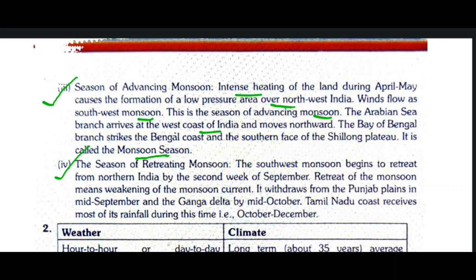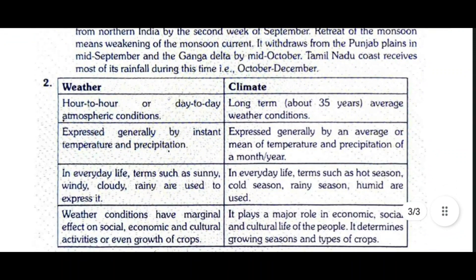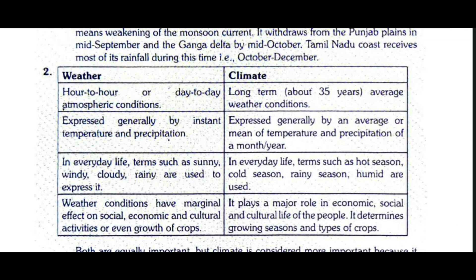The fourth season is the season of returning monsoon. The southwest monsoon retreats from northern India by the second week of September. Retreat of the monsoon means weakening of the monsoon current. It withdraws from the Punjab plains in mid-September and the Ganga delta by mid-October. The Tamil Nadu coast receives most of its rainfall during this period, from October to December.